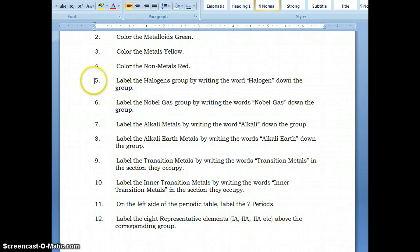And you should have the various groups labeled. You should label your halogens, label your noble gases, your alkalis, your alkali earth, your transition metals, your inner transition metals, also known as your rare earth metals, and the seven periods, and the eight representative element groups.